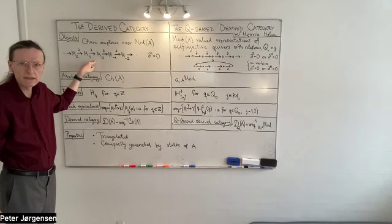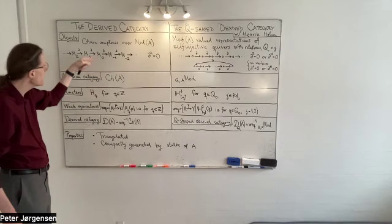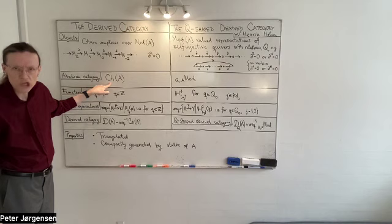You can imagine what a morphism of chain complexes might look like. So if you had a second chain complex below this one, you could have a ladder, a commuting ladder, that would be a morphism of chain complexes. And if you take chain complexes as your objects and ladders as your morphisms, then you get a category here called CH of A, that stands for chains of A, chain complexes over A.